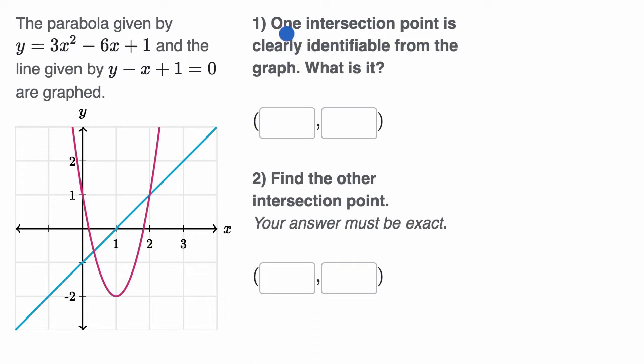So one intersection point is clearly identifiable from the graph. I see two intersection points, that one and that one there. This second one seems clearly identifiable because when I look at the grid, it looks to be at x equals two and y equals one. It seems to be the point two comma one.